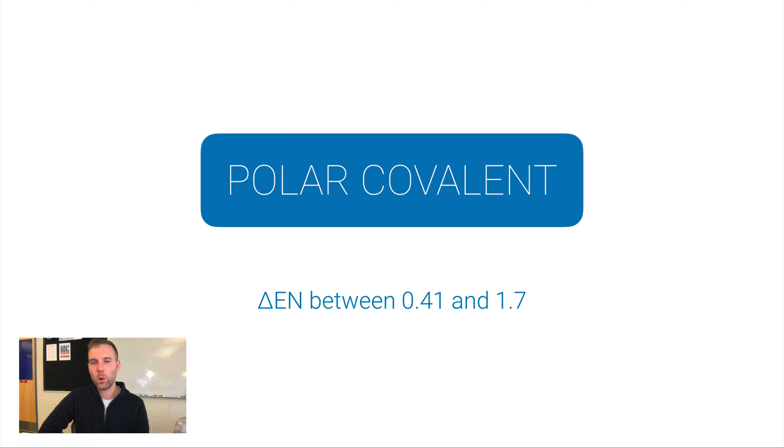This happens when the electronegativity difference between the two atoms is between 0.41 and about 1.7. It's kind of hard to come up with a cutoff for the upper side of the polar covalent range. If you check with a different chemistry teacher, they may tell you 1.6 or I've even seen 1.4, which is pretty low. Essentially, if you've got a big enough electronegativity difference and the bond is between two non-metals, that means definitely you're going to have a polar covalent bond.